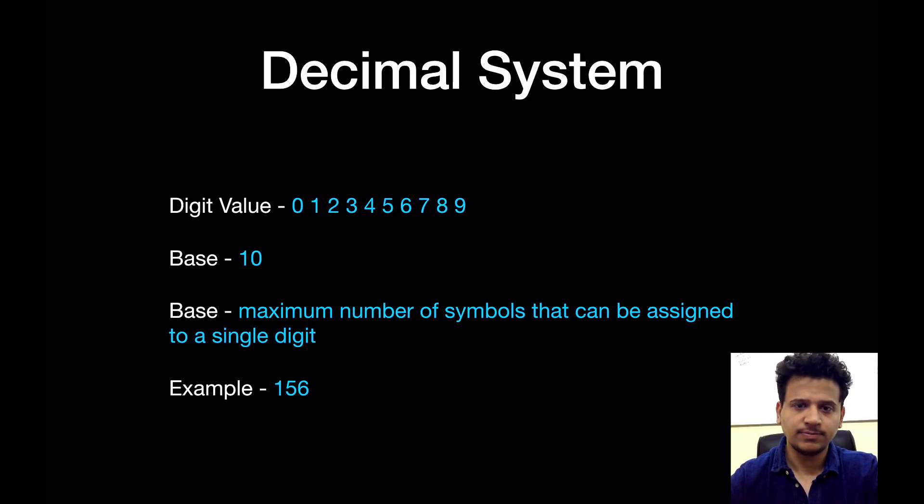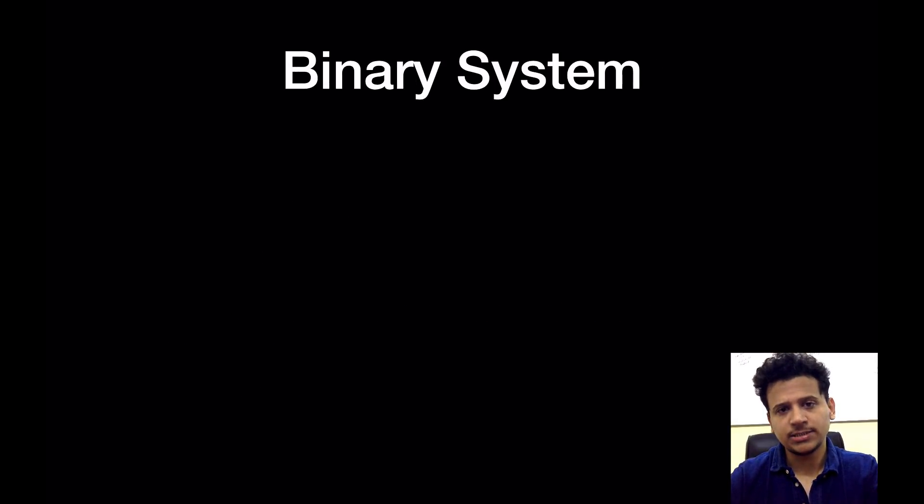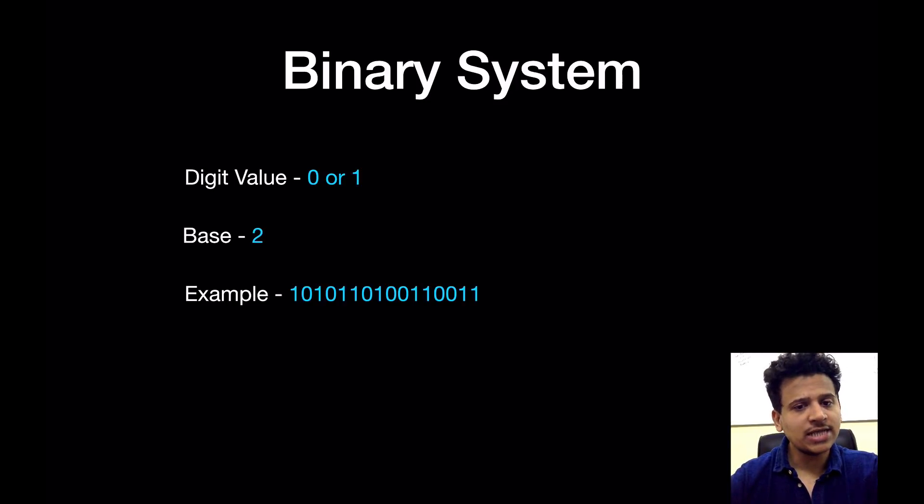That means to a single digit we can assign 10 different types of symbols from 0 to 9. So 156 is an example of a decimal system. Next we'll look at the binary system.